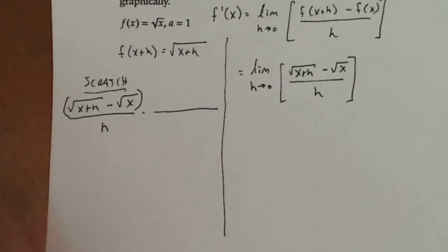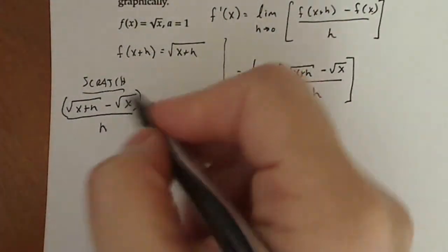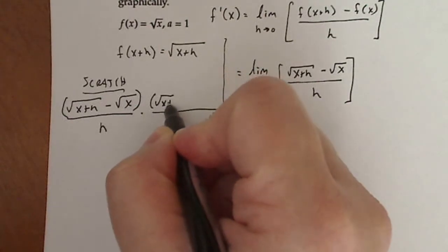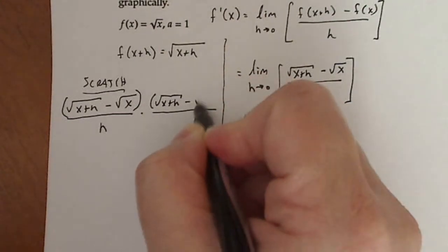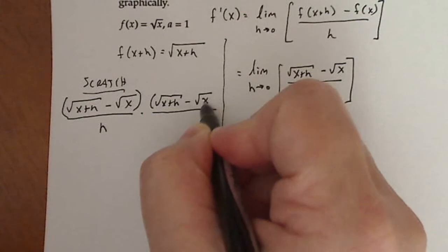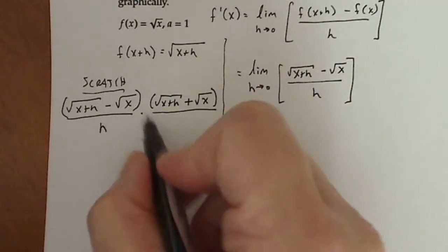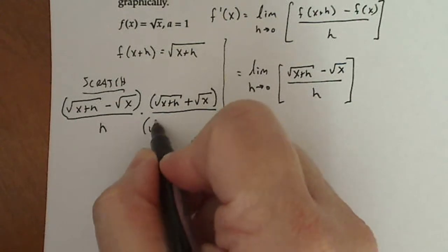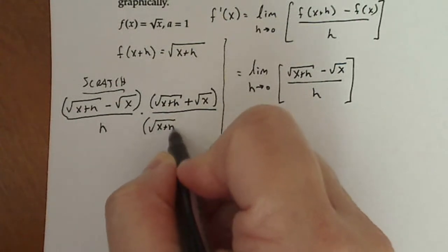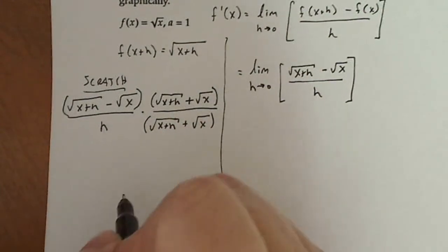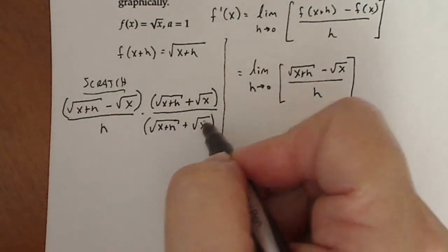So if I'm looking at that term right there, the conjugate is going to be the exact same thing except for with the plus sign in the middle. Square root of x plus h minus the square root of x, but instead of minus, it's got to be the opposite sign in order for the conjugate to happen. If I do it on the top, I have to multiply by the same value on the bottom in order to keep the expression the same value. So this is just a big old one right here.